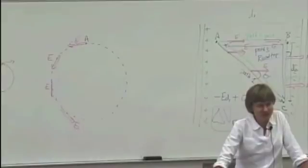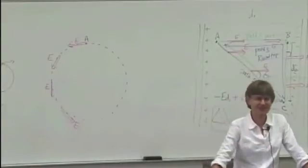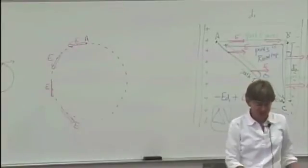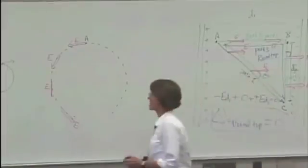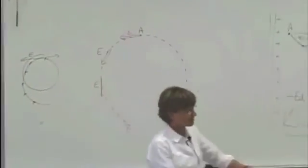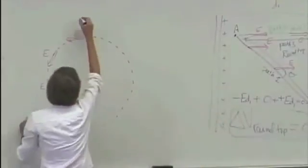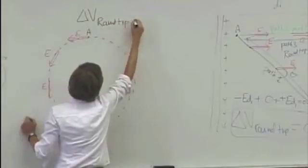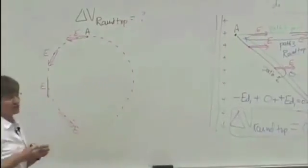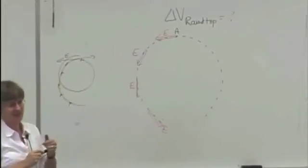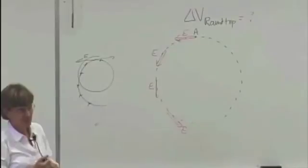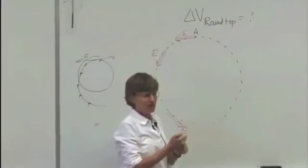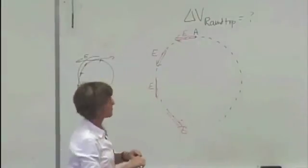Not because you need an infinite number of point charges — I can get a lot of point charges. Suppose we had this configuration. What would ΔV for the round trip be for this path?